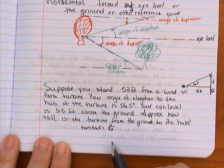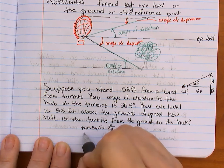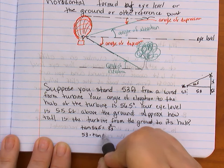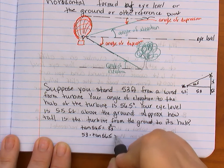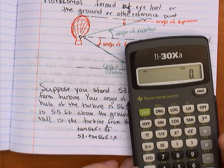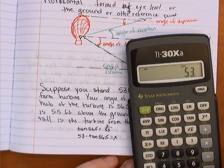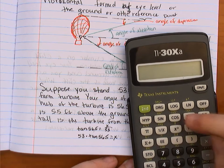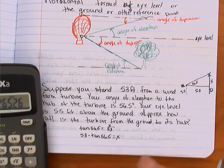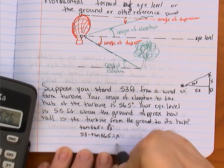Then I'm going to want to get x alone. So I'm going to multiply both sides by 53. That's going to give me 53 times the tangent of 56.5 is equal to x. And I just plug that into my calculator. So 53 times 56.5 tangent equals 80 feet. So x is 80 feet.